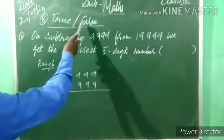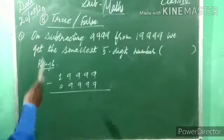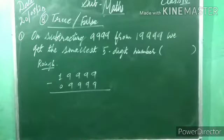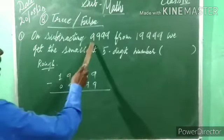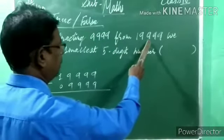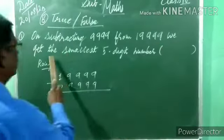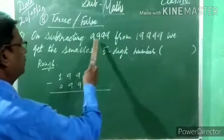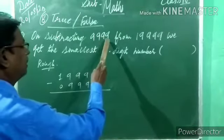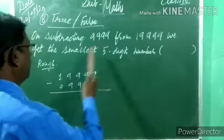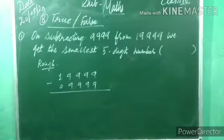Now write true or false. If the statement is correct write true, otherwise false. First question: on subtracting nine thousand nine hundred ninety-nine from nineteen thousand nine hundred ninety-nine, we get the smallest five-digit number.